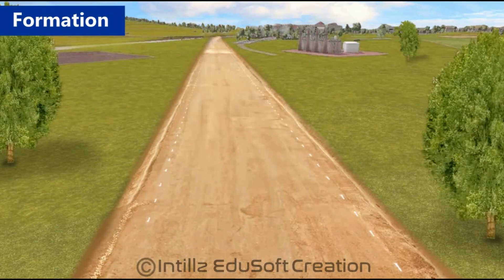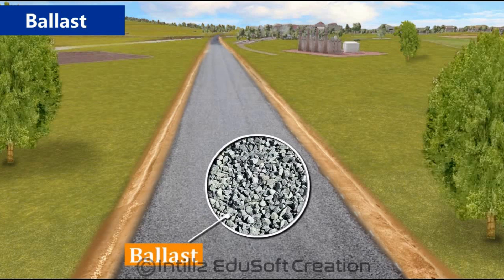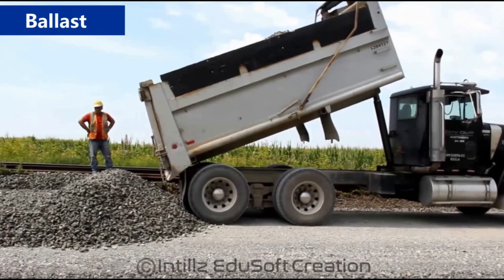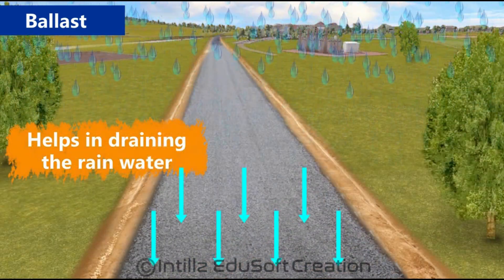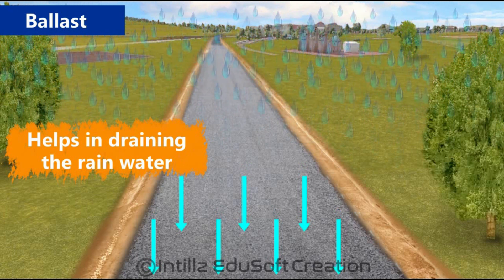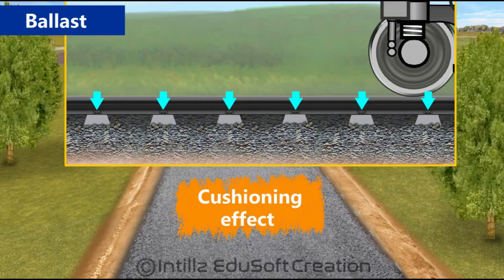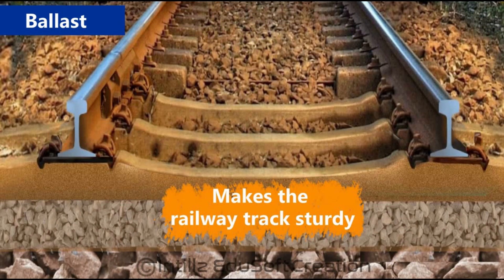Once the formation is prepared, the ballast is spread. Ballast consists of hand-broken stones. The ballast bed is prepared in such a fashion that the level of the railway track is again raised. The ballast helps in draining rainwater. Secondly, it provides a cushioning effect for the train travel. Thirdly, the ballast makes the railway track sturdy and does not allow the track to have lateral and horizontal movement.